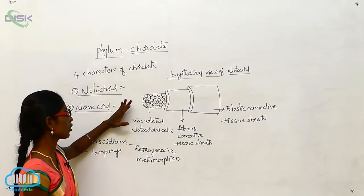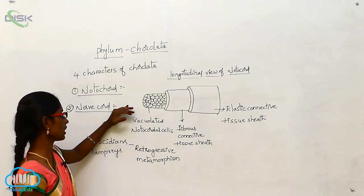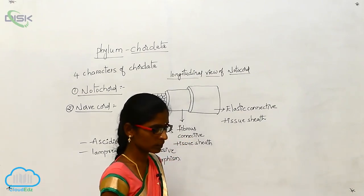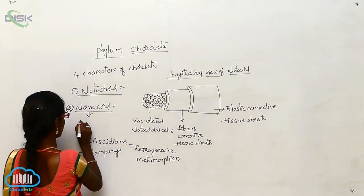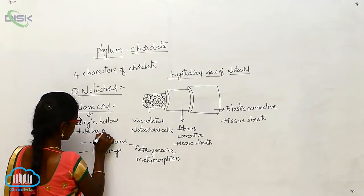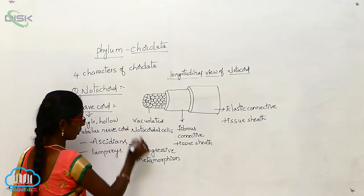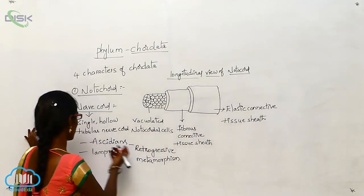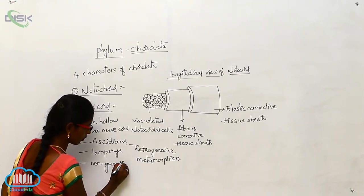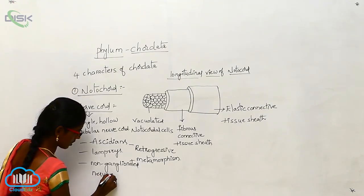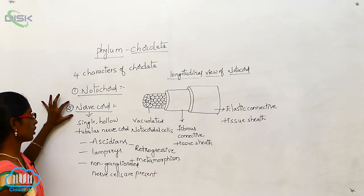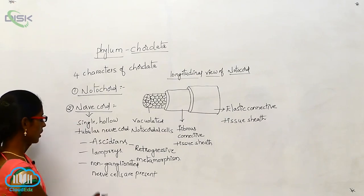The second character is the nerve cord. The nerve cord is present in some chordates and extends from the anterior to the posterior part. It is a single hollow tubular nerve cord, in which non-ganglionated nerve cells are present.